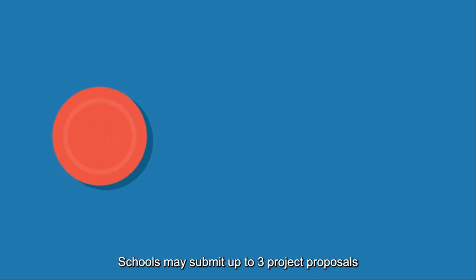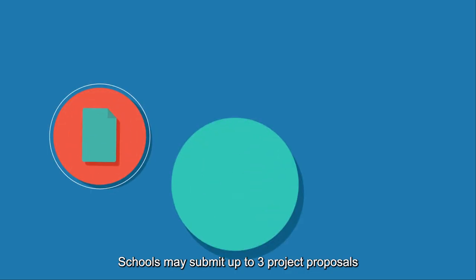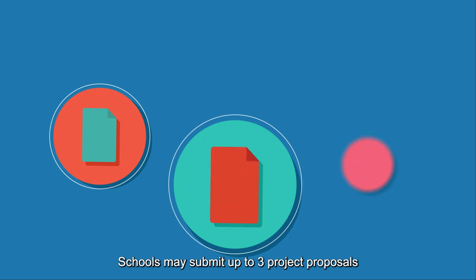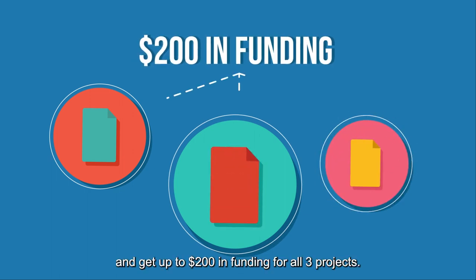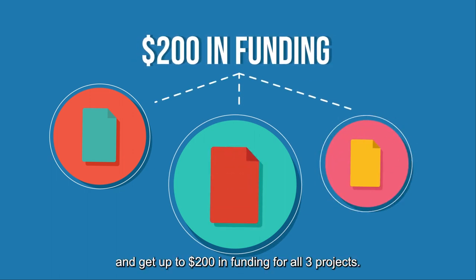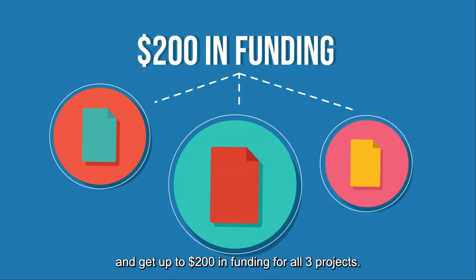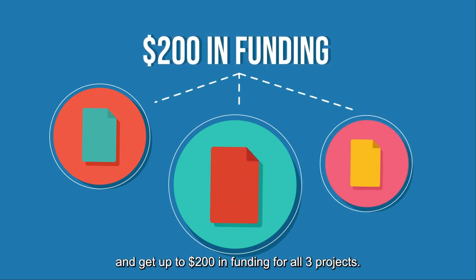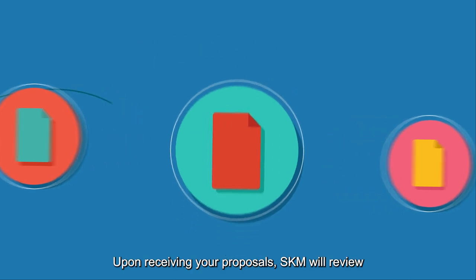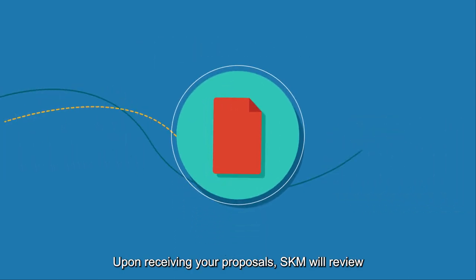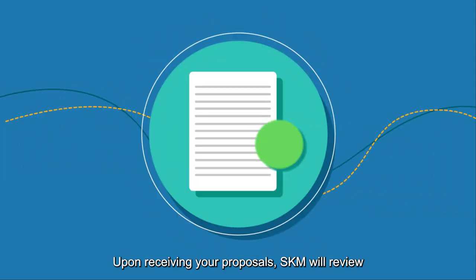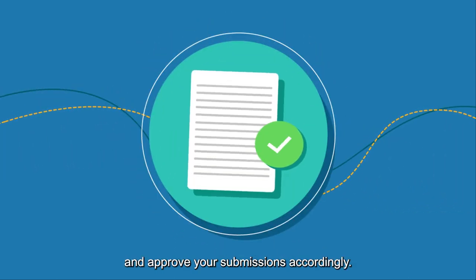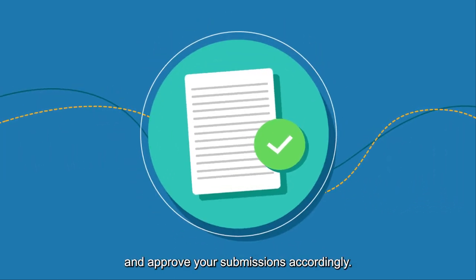Schools may submit up to three project proposals and receive up to $200 in funding for all three projects. Upon receiving your proposals, SKM will review and approve your submissions accordingly.